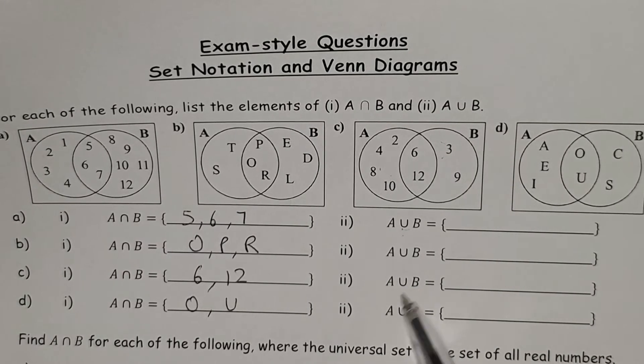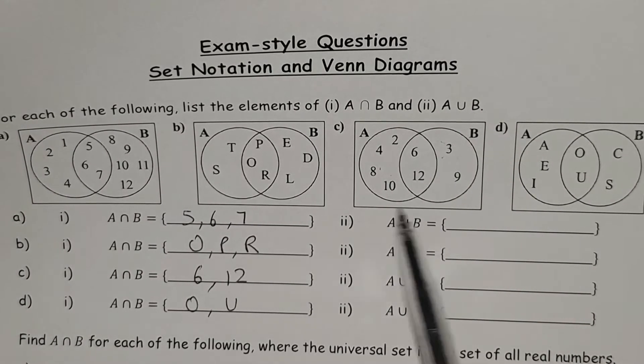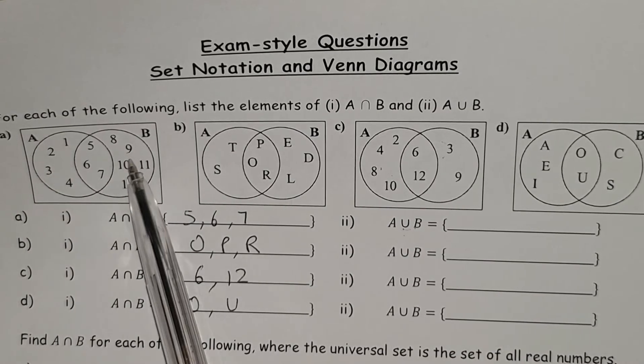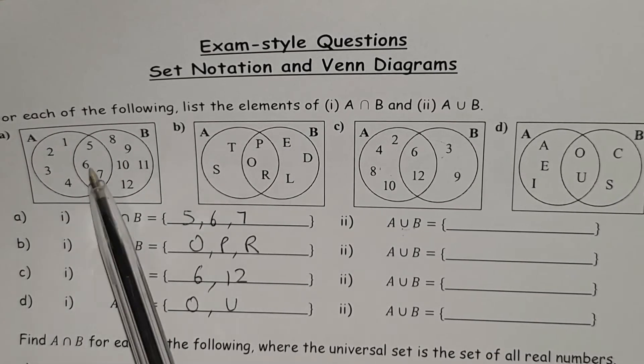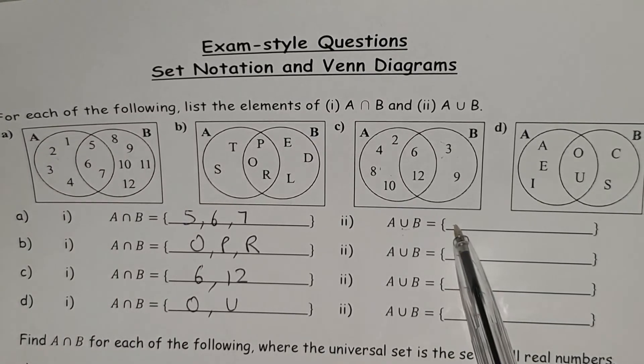So for the second part of question number one, we are using the OR rule which is basically the union. So it's going to be set A and set B. So it's basically all of the numbers in set A and set B that go over here.